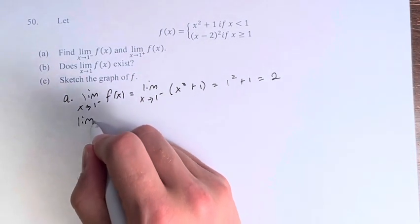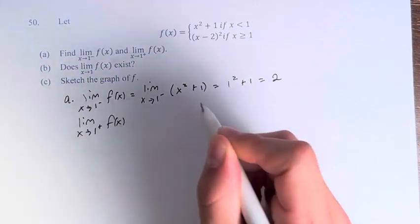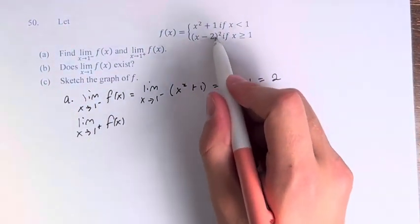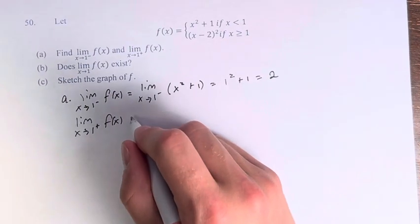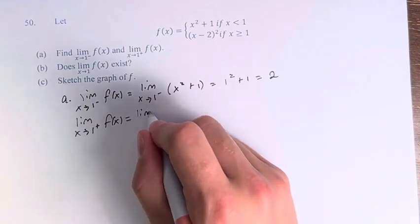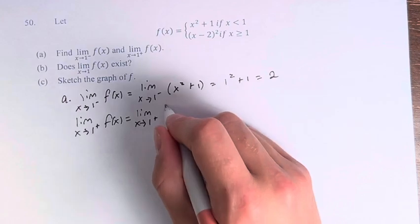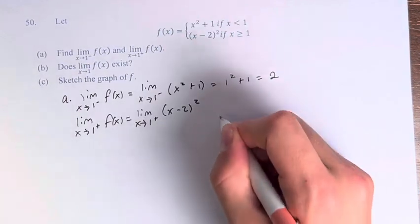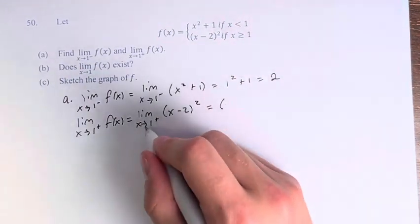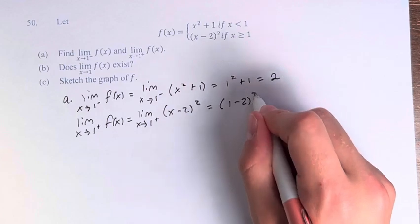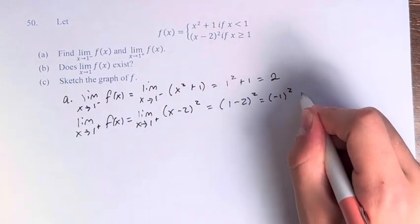The limit as x approaches 1 from the right means we're dealing with values that are greater than 1. So we're using this definition for x is greater than 1. This is equal to the limit as x approaches 1 from the right of x minus 2 squared. Therefore, we just plug in 1 directly. 1 minus 2 squared is negative 1 squared, which is 1.